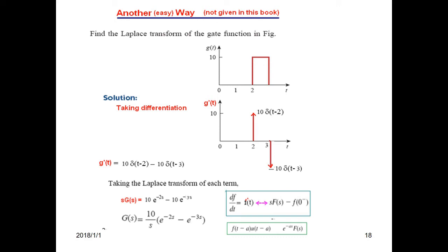differentiate the gate function. We'll get two impulses: one is the positive-going impulse with amplitude 10, another is the negative-going impulse with amplitude -10.